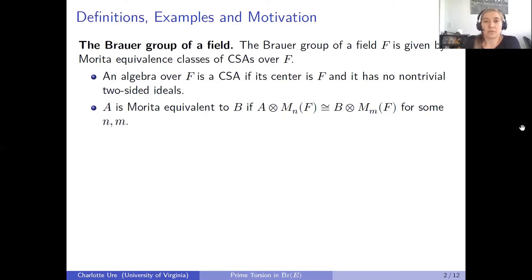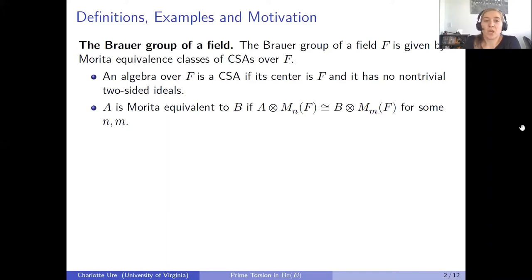On the set of central simple algebras, we can define an equivalence relation. We say that two central simple algebras A and B are Morita equivalent if and only if A tensor some matrix ring M_n(F) is isomorphic to B tensor some matrix ring M_m(F). The Brauer group is then given by the set of equivalence classes, and the group operation is given by the tensor product.